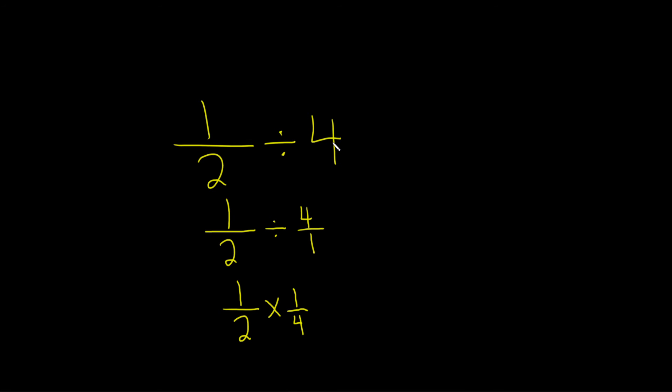So the first step was to write this as a fraction because we wanted to find the reciprocal. Once it's written as a fraction, just remember, division is always multiplication by the reciprocal. So you just change your divide to times, and then you flip your fraction.